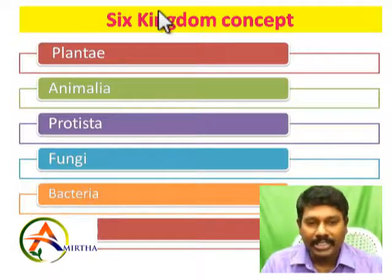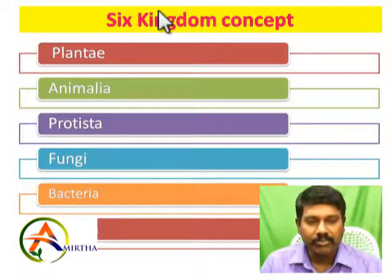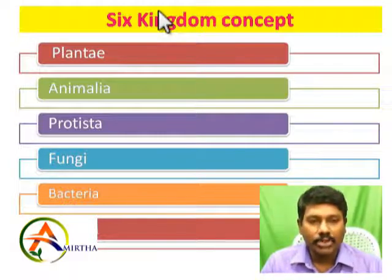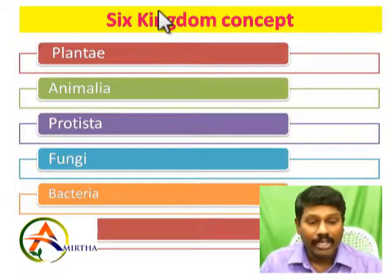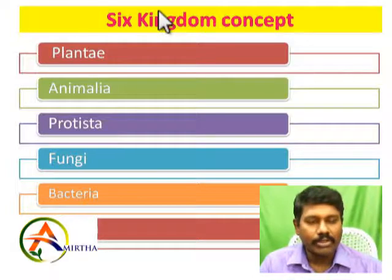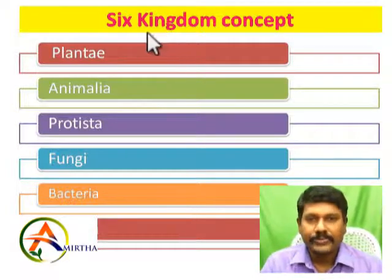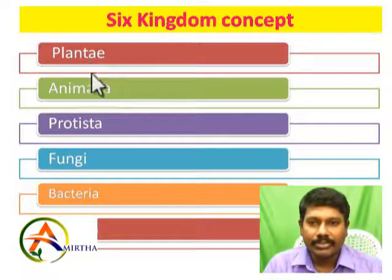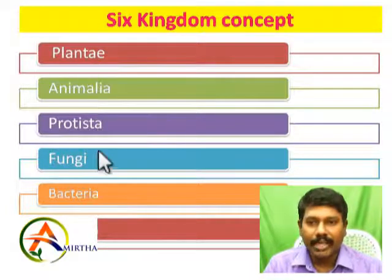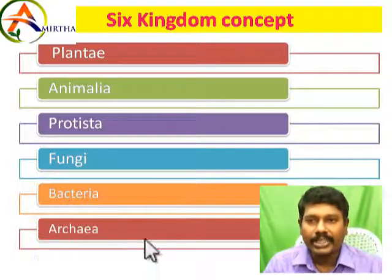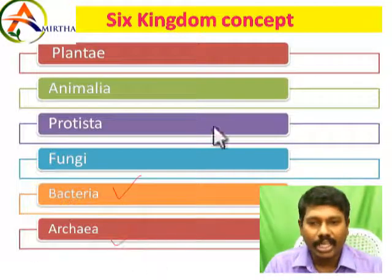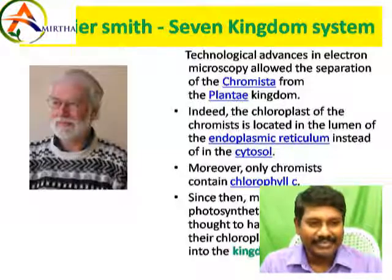In the evolution and initial stages of Earth's formation, there were extreme environmental conditions — very hot or very cool — and Archaebacteria survived those conditions. So in six kingdoms, the five kingdoms — Plantae, Animalia, Protista, Fungi, and Monera — now Monera is split into two: Eubacteria and Archaebacteria.